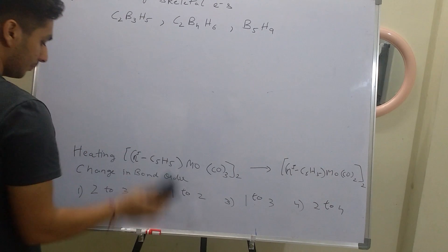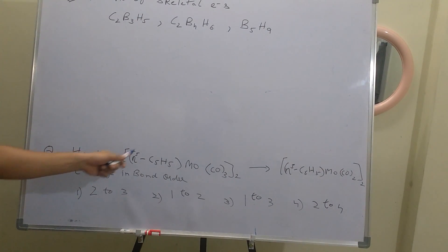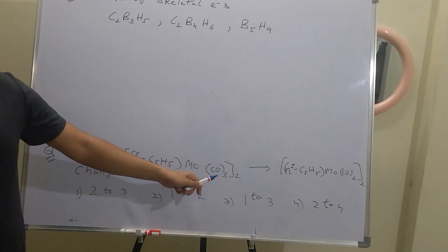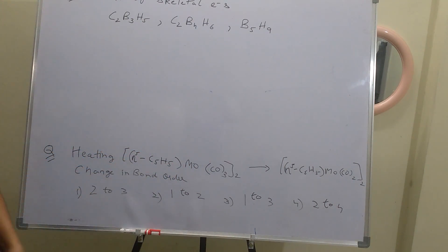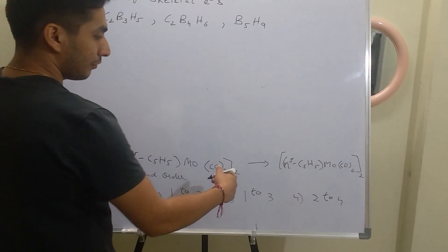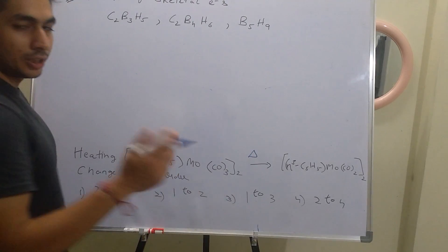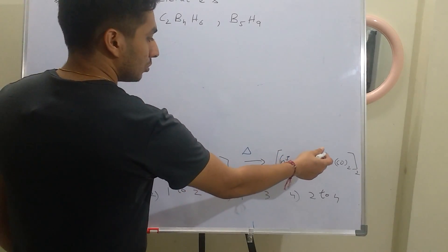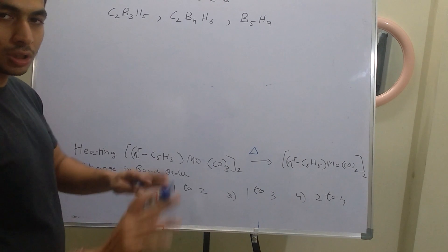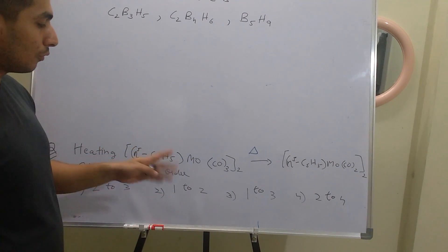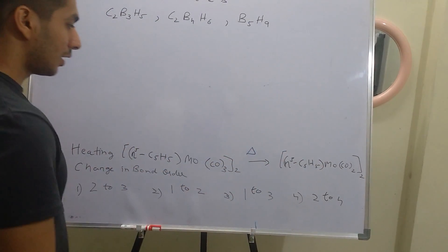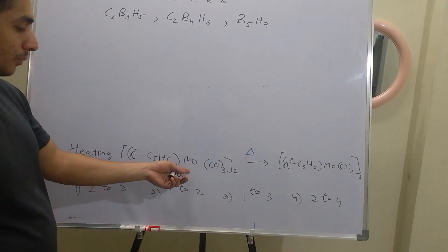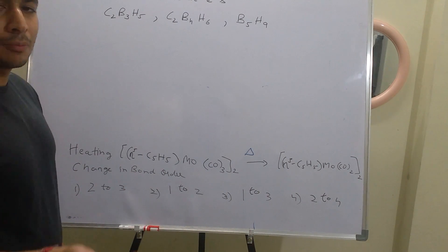Now the next question: on heating the compound [η5-C5H5-Mo(CO)3]2, which is a dimer, 2 CO groups are removed, giving [η5-C5H5-Mo(CO)2]2. The question asks what is the change in bond order. There are 2 molybdenum atoms — 2 metal atoms — so we need to calculate the number of metal-metal bonds in each case.